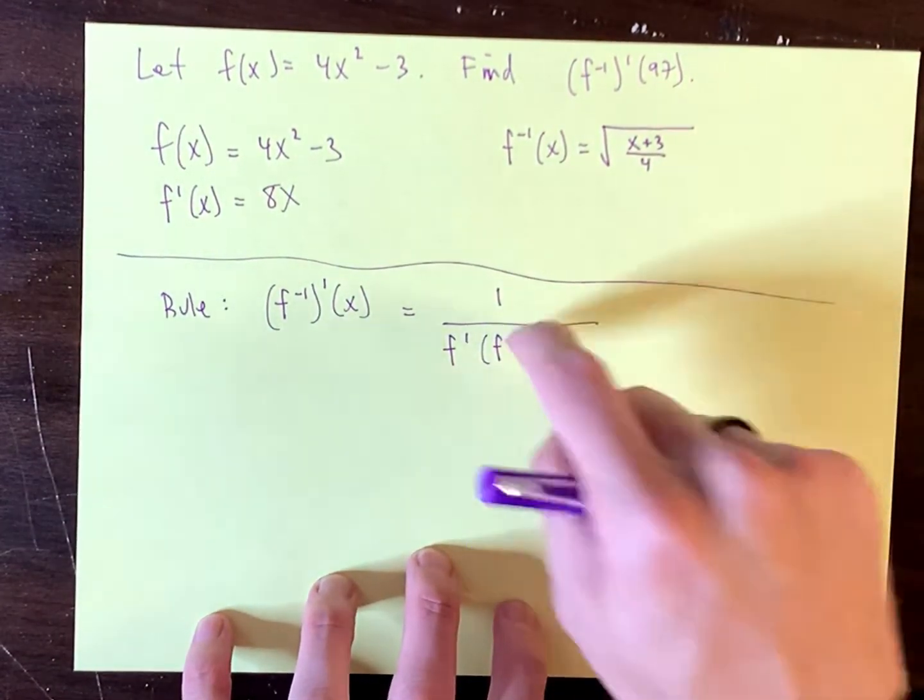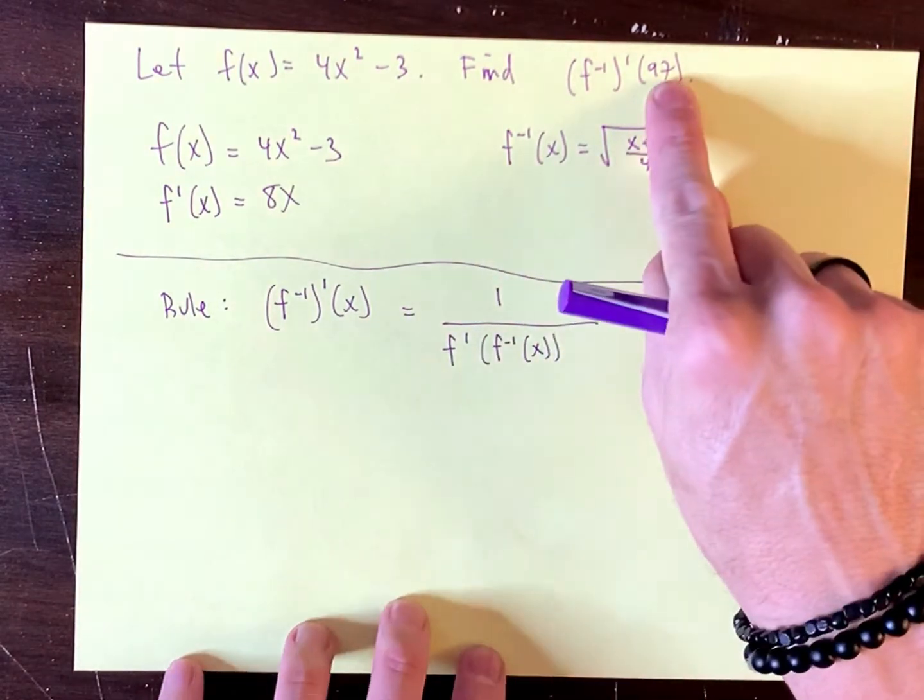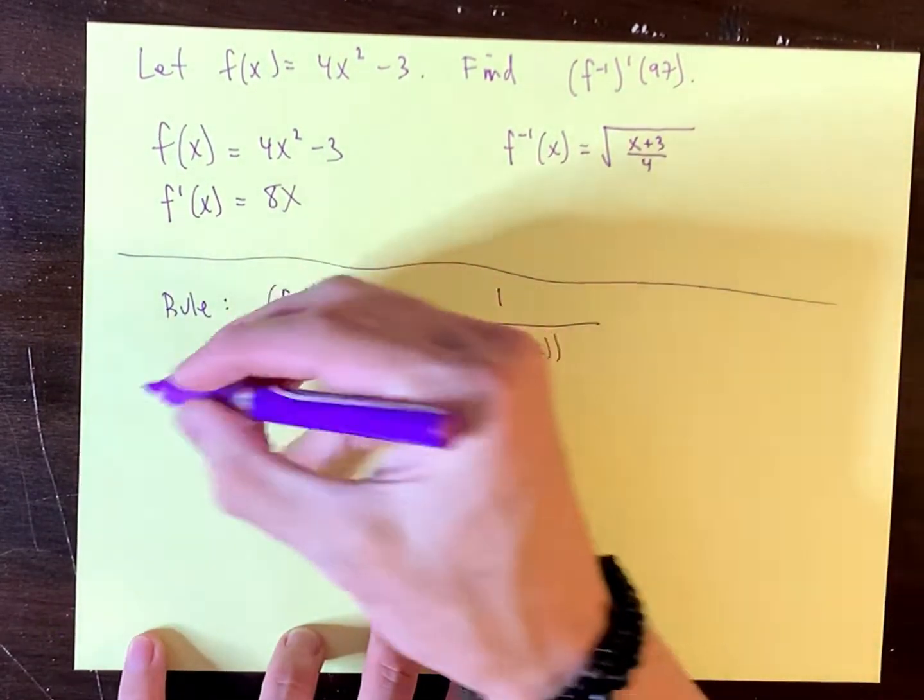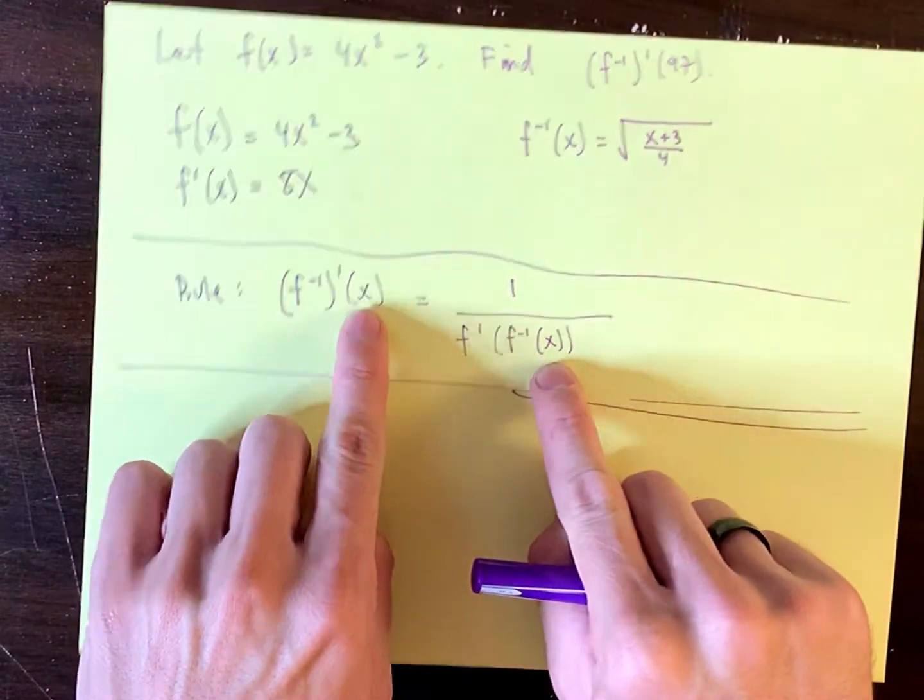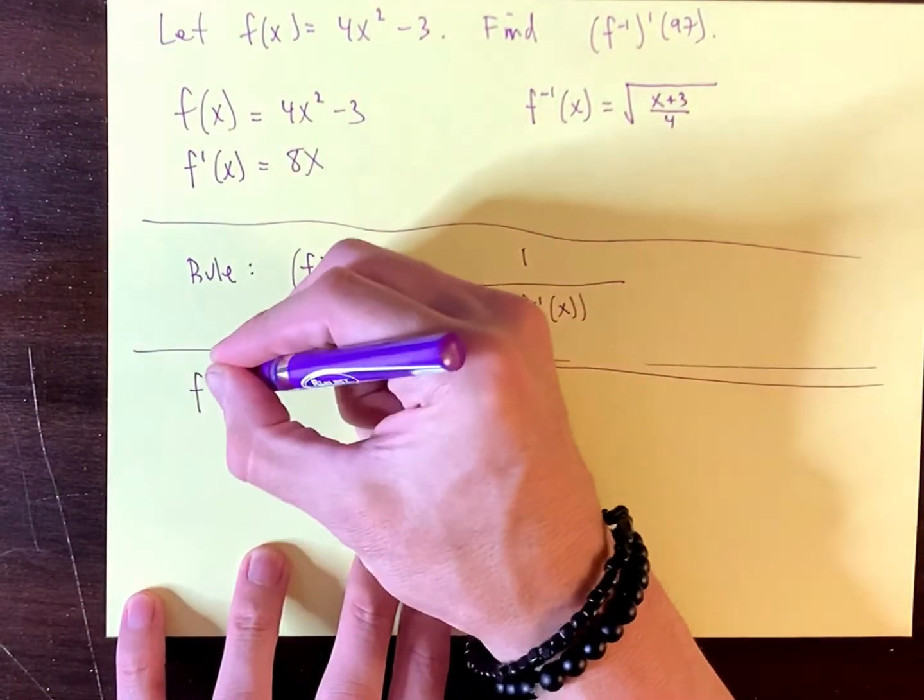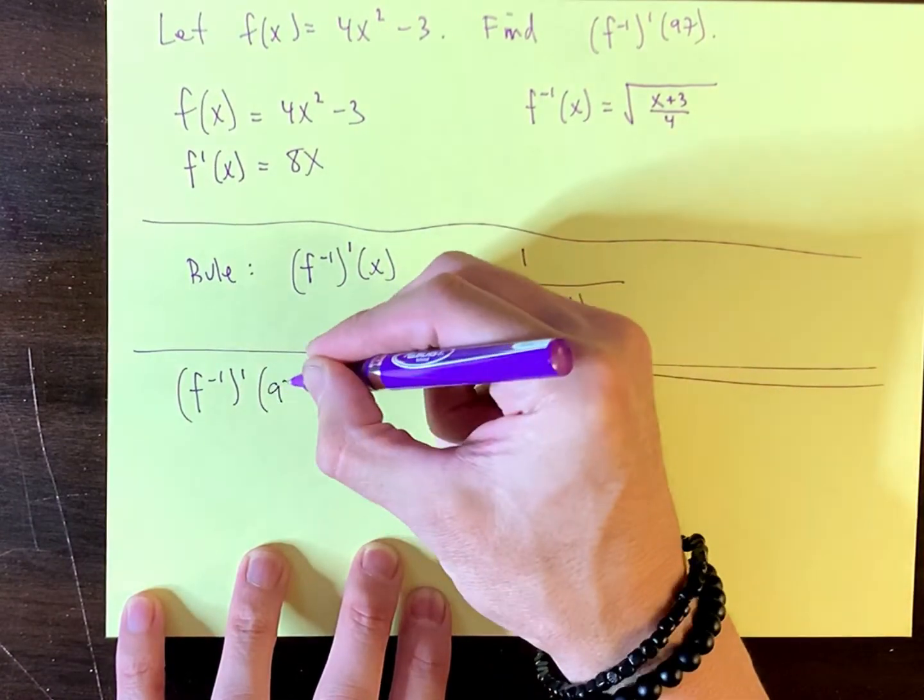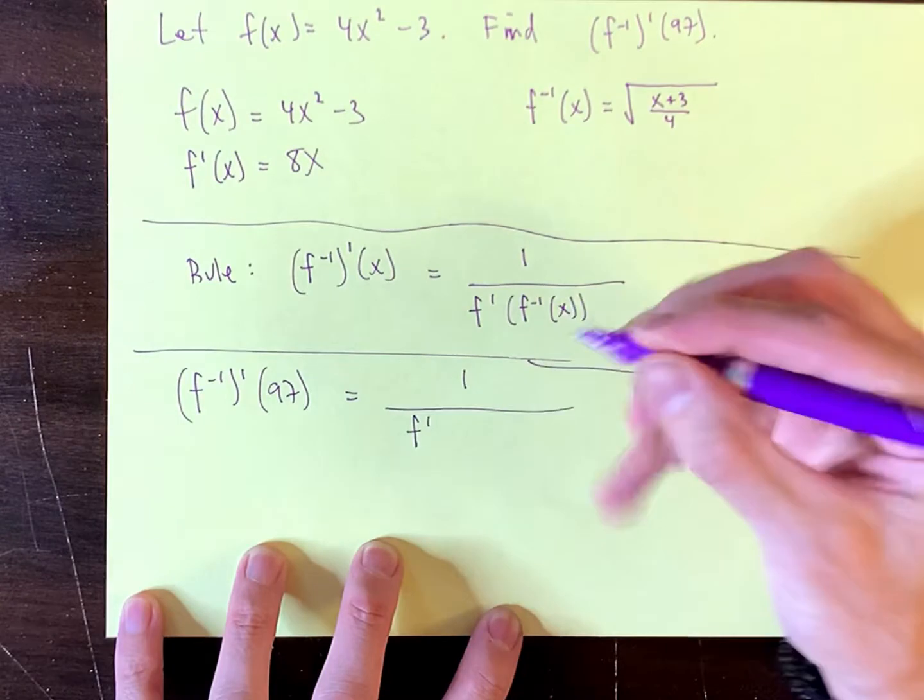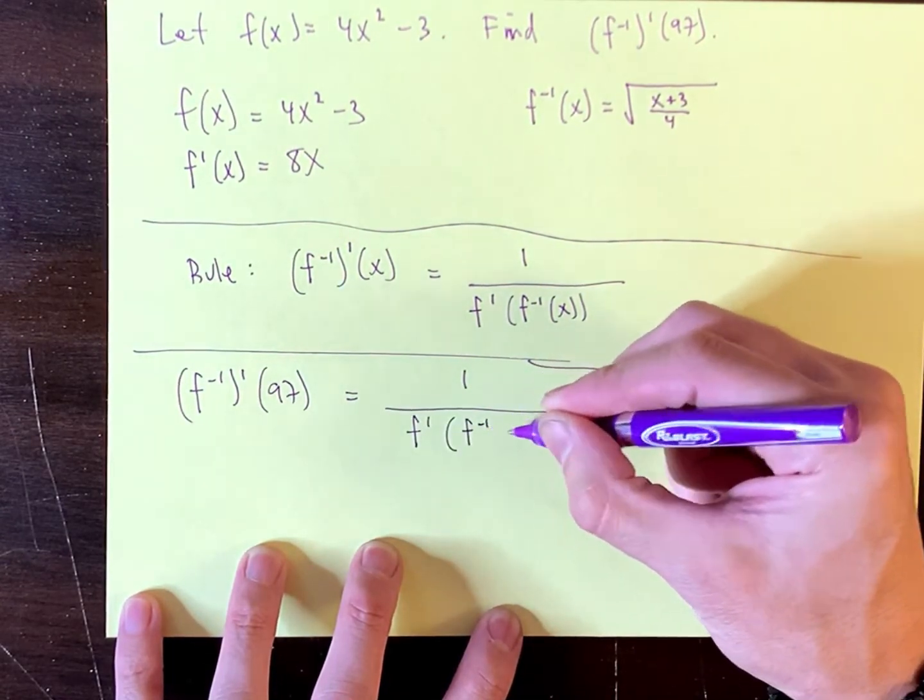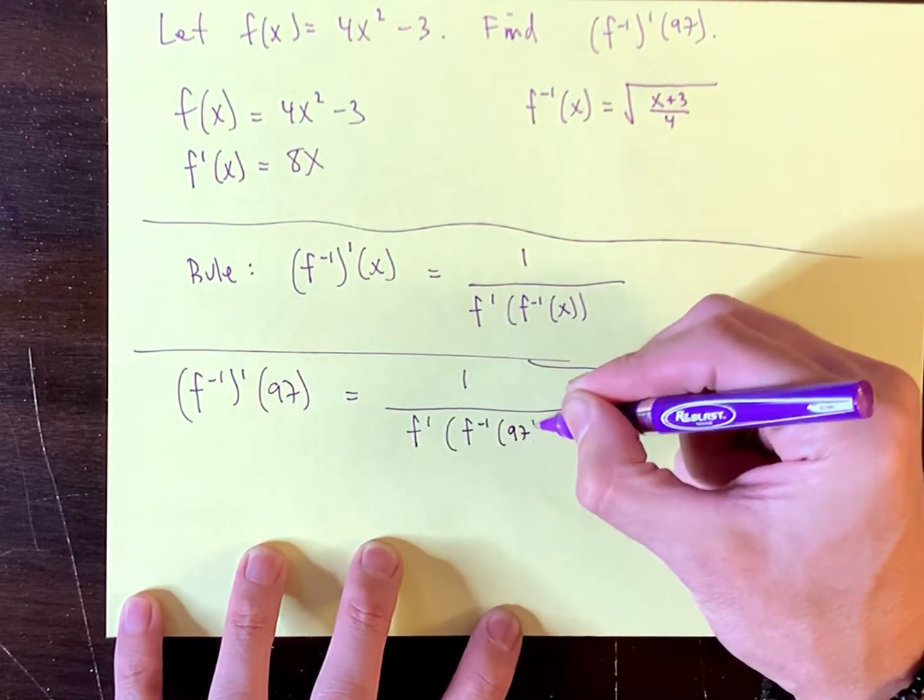I'm going to do this over here, and I'm going to apply it for the number 97. So let me rewrite this rule down here. But 97 goes in for the inputs. And watch how this works. F inverse primed at 97 equals 1 over f prime evaluated at the inverse taken at 97.